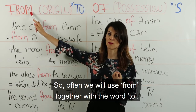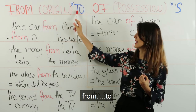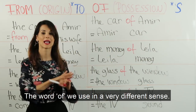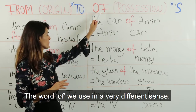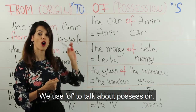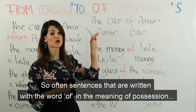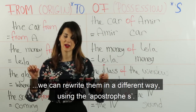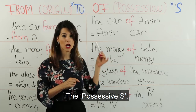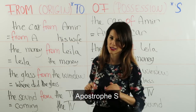So often we will use 'from' together with the word 'to'. أوقات كثير رح نستعمل 'from' مع 'to' — من إلى. The word 'of' we use in a very different sense. كلمة 'of' بنستعملها بمعنى مختلف. We use 'of' to talk about possession. بنستعمل 'of' لنحكي عن الملكية. So often in sentences written with 'of' in the meaning of possession, we can rewrite them using the apostrophe S — the possessive S. ممكن نكتبها بصيغة أخرى مع استخدام الفاصل العالي وحرف الـ S اللي بيدل على الملكية.